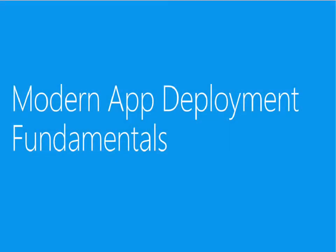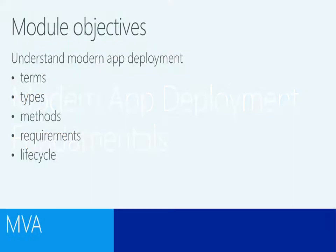So without further ado let's have a look at the modern app deployment fundamentals. In this section we're going to work out the nomenclature that's changed around deployment for Windows 8 and Windows RT applications and work through the common language that you'll need to understand in order to get to grips with all the content in the rest of the modules. The objectives across this particular module are so that you can understand the terms but also understand the different types of deployment that we'll be using.